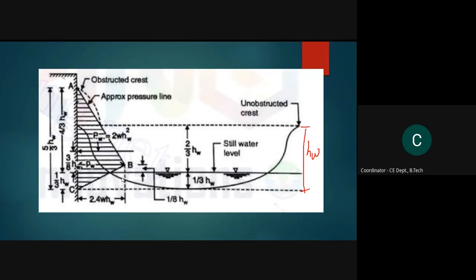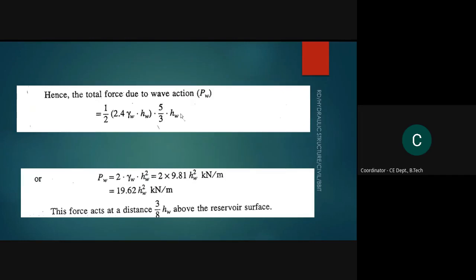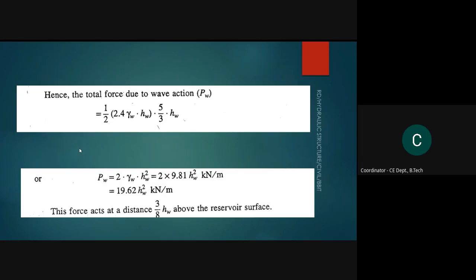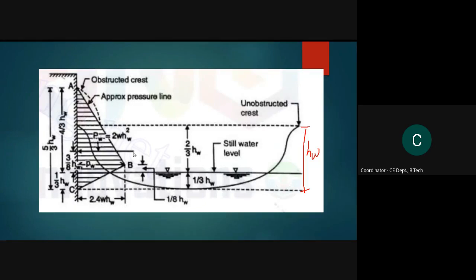The total force Pw = ½ × 2.4γW·HW × (5/3)HW = 2γW·HW². Substituting γW = 9.81 kN/m³ gives Pw = 19.62·HW² kN/m. This force acts at a distance of 3/8 HW above the reservoir surface.